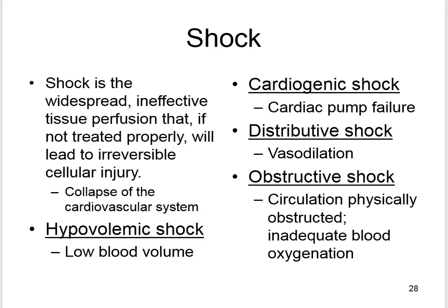Distributive shock involves vasodilation and includes septic shock, anaphylaxis, or a drug or toxin reaction, as well as Addisonian crisis. Neurogenic shock is a sudden loss of signals from the sympathetic nervous system that maintain normal vessel tone; the vessels dilate, blood pools, and blood pressure decreases. Obstructive shock occurs when circulation is physically obstructed with inadequate blood oxygenation; it is caused by tension pneumothorax, cardiac tamponade, or pulmonary embolism.